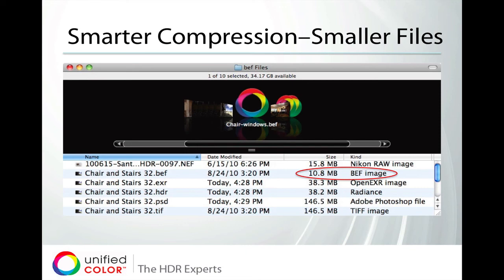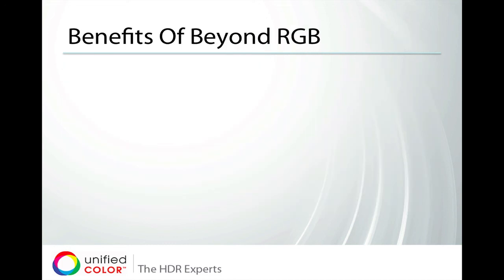Beyond RGB files are saved in the BEF file format, and the advantage of BEF is also noticeable in the amount of compression you get for the same image. This one image stored as a BEF file is 10.8 megabytes — a 32-bit Beyond RGB file. Looking at other standard HDR file formats like OpenEXR and Radiance HDR, they are almost four times as large at 38 megabytes. A 32-bit TIFF or Photoshop file of the same image is 146.5 megabytes. The original Nikon RAW file — just one of the files used to make this 32-bit image — is 15.8 megabytes. So you see a very good compression ratio, smaller files, and faster processing as a result of using the BEF file format.